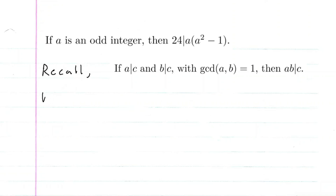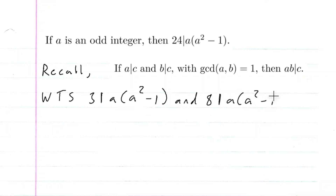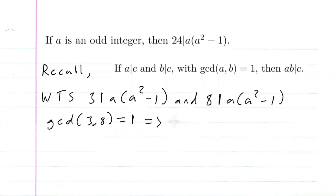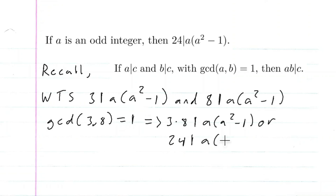We want to show that 3 divides A times A squared minus 1 and 8 divides A times A squared minus 1, because we know the GCD of 3 and 8 is equal to 1. So if we have all these three things together, this implies that 3 times 8 divides A times A squared minus 1, or 24 divides A times A squared minus 1. So this is the plan.